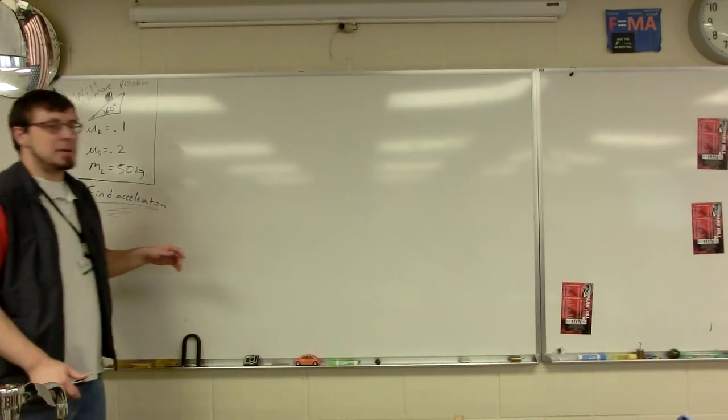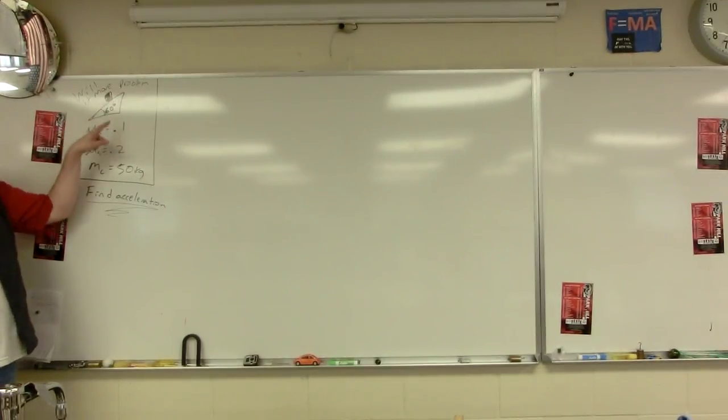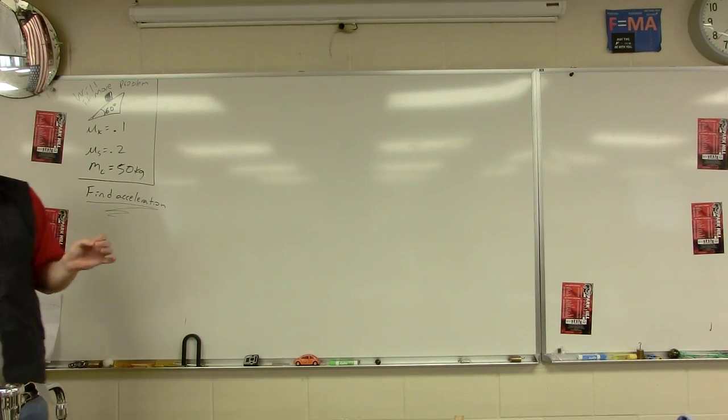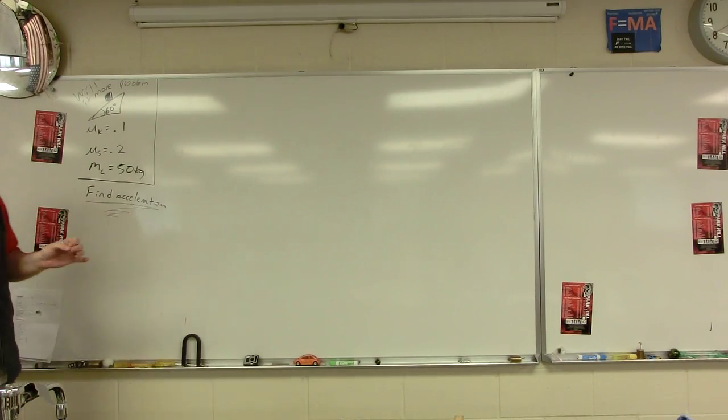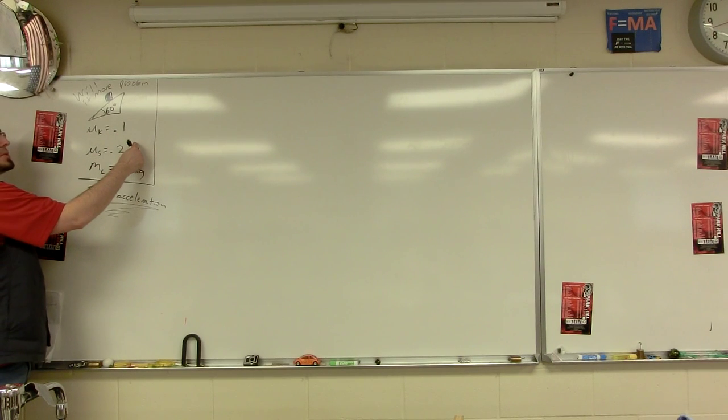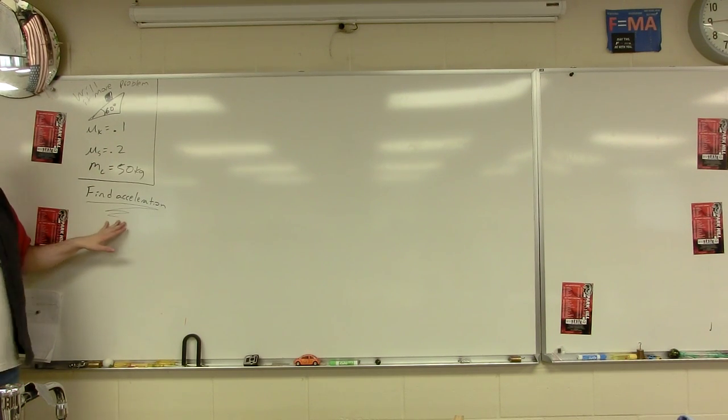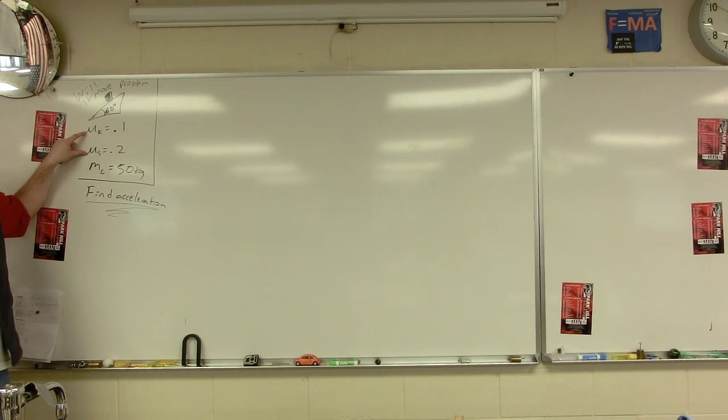Alright, so this is an incline plane problem and it's a will it move incline plane problem. On a test, it may not say that it's a will it move problem. It might just give you mu sub k and mu sub s and say find the acceleration. So how do you know if you have to prove if it moves or not? If you're given both mu sub k and mu sub s. Very good. Questions on that part?